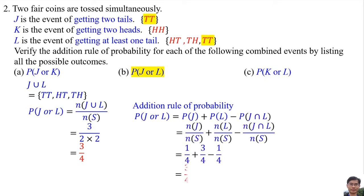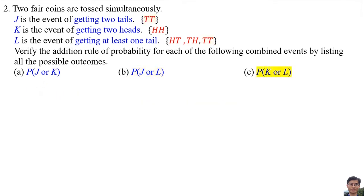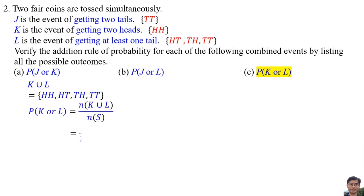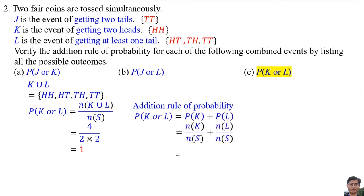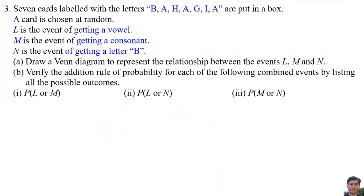The probability of J or L is 3/4. The addition rule of probability also gives 3/4. For the probability of K or L, K or L is K union L with elements HH, HT, TH, and TT. The probability of K or L is 1. The addition rule of probability also gives 1.